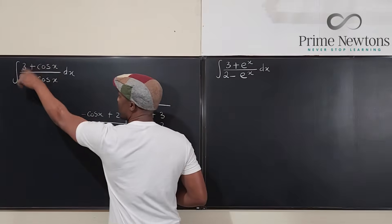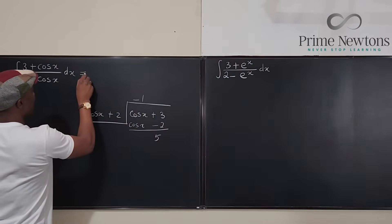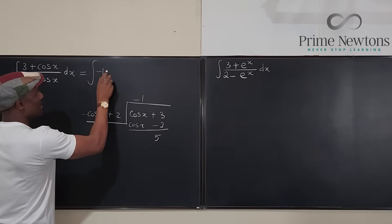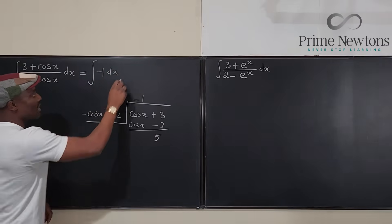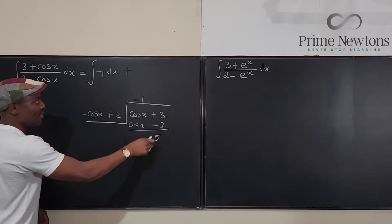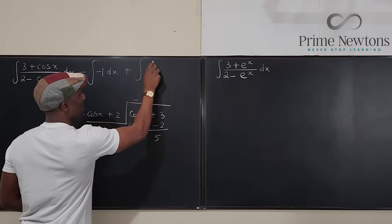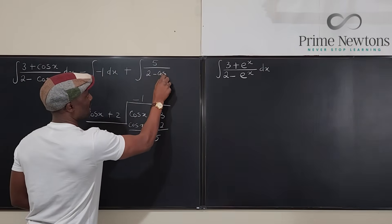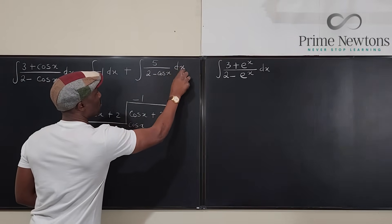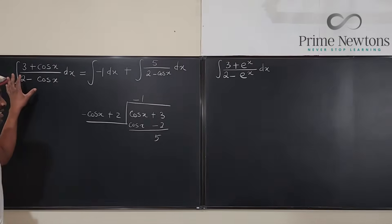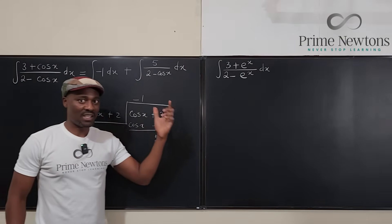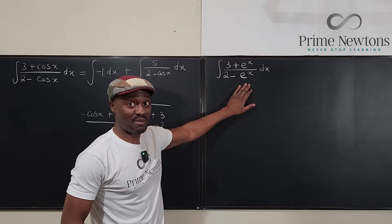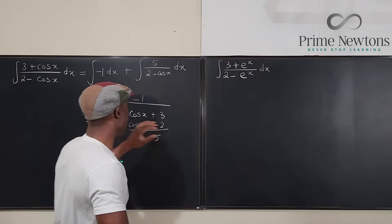Ultimately, this integral can be rewritten as the integral of negative one dx, plus the remainder five over the divisor, which is two minus cosine x. We have successfully rewritten this expression in a much easier fashion. The same thing will happen if you apply the same rule to the exponential version.